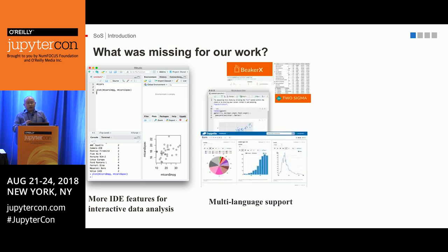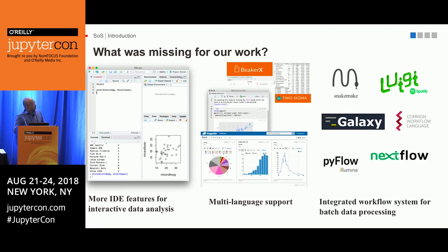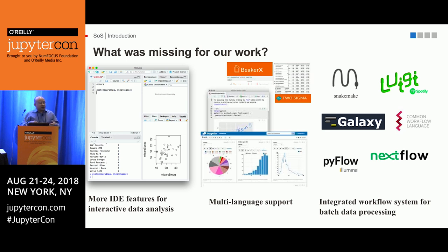Also, Jupyter only supports one kernel for one notebook. That means when I have a biometric project and need to use multiple languages and multiple kernels, I end up with multiple notebooks — which is troublesome. I would rather prefer having one notebook with all my analysis in it. And the last issue: we really want an integrated workflow system for Jupyter. But that's unfair, because Jupyter is really good at what it's designed for. Asking Jupyter to do batch processing workflows is like asking Usain Bolt to compete with Michael Phelps in swimming.